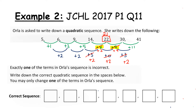By simply changing that one term to 21 it creates the correct quadratic sequence. You might be able to see that straight away or you may need to do some work — either way is absolutely fine. And this is the term we have changed.